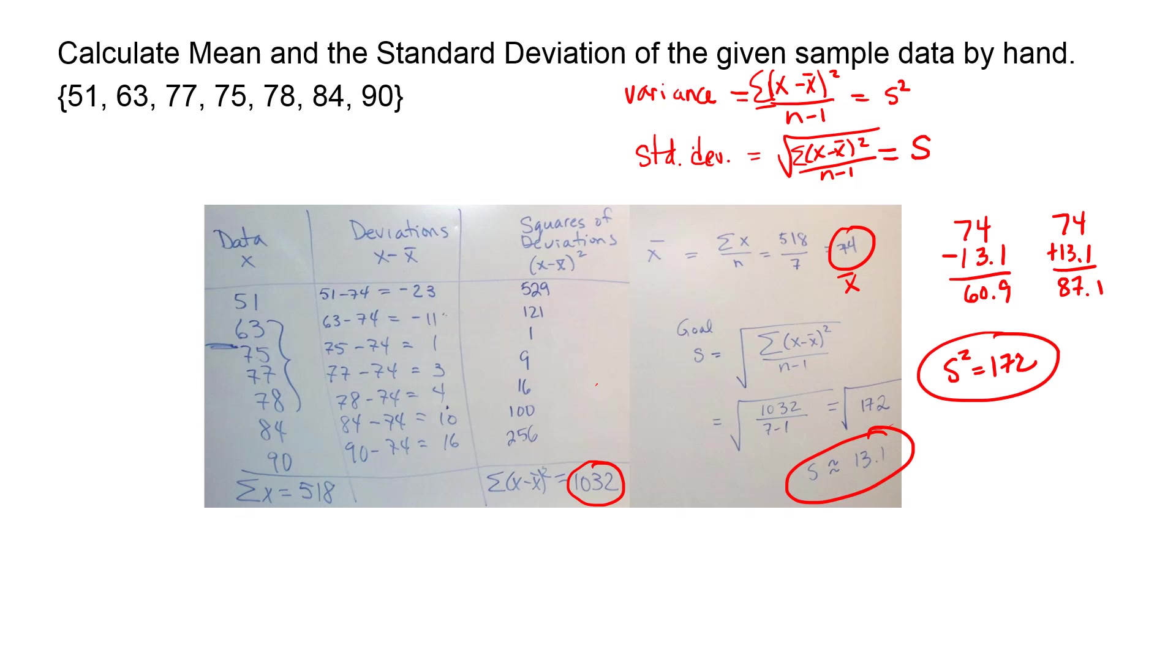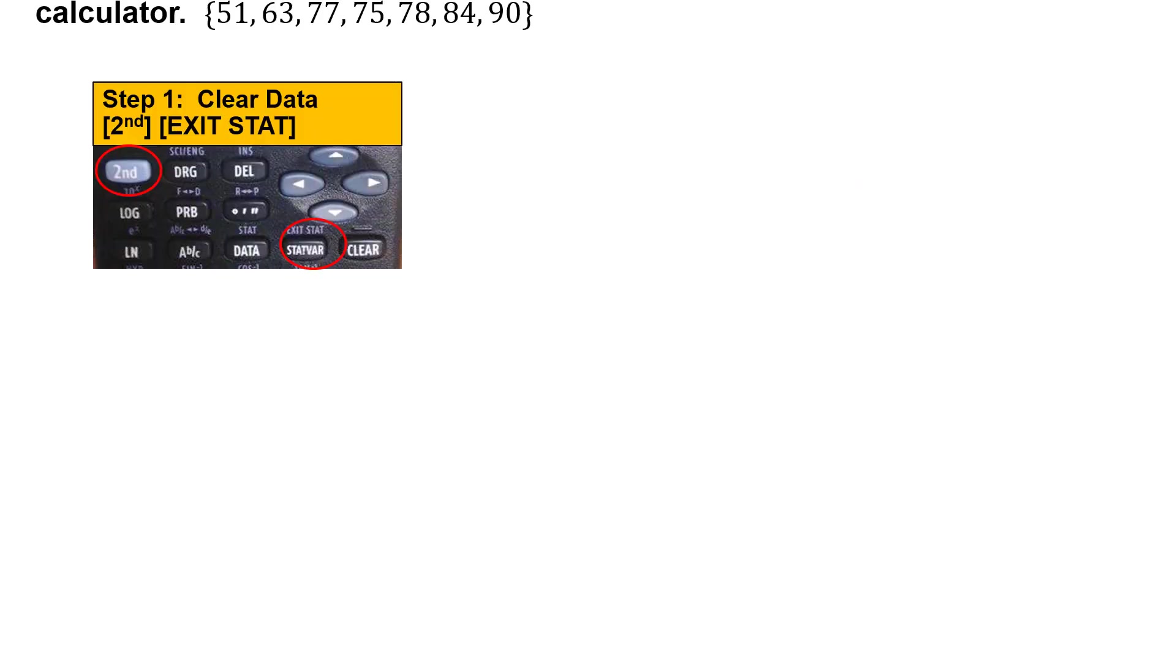All right let's use our calculator to do the same thing. Okay we're gonna step one we're gonna clear the data so you go second exit stat. Exit stat is right above the stat var key. So now your data is cleared. So now step two we're gonna enter the data. So we have to go to the data button. So you hit second stat the data button and you see one var on your screen and you hit enter.